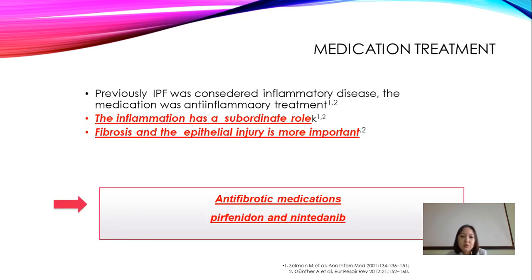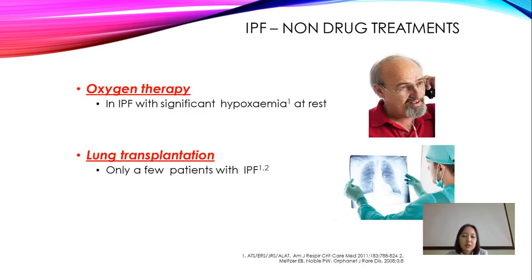For medication treatment we must decrease the inflammatory response and slow the speed of fibrosis and epithelial injury. We use anti-fibrotic medications such as pirfenidone or nintedanib. Non-drug treatment is divided into two groups: oxygen therapy and lung transplantation.